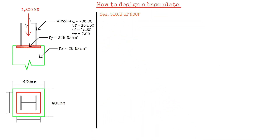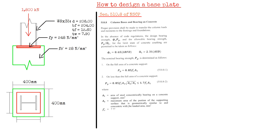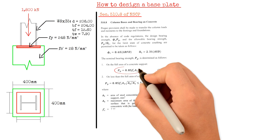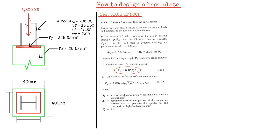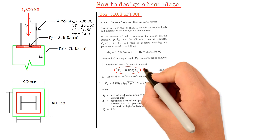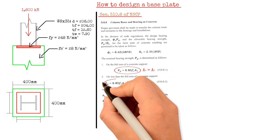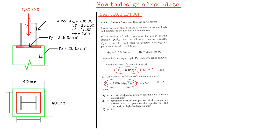Based on NSCP Section 510.8, the design bearing strength for the limit state of concrete crushing is given by the following equations. The nominal bearing strength, P_P, equals 0.85 times the concrete strength times Area 1. Alternatively, P_P equals 0.85 times the concrete strength times Area 1 times the square root of Area 2 over Area 1. This second equation is used when the area of the concrete pedestal is greater than the area of the base plate, but the result must be less than or equal to 1.70 times the concrete strength times Area 1. Here, Area 1 is the area of the steel base plate and Area 2 is the maximum area of the supporting concrete.